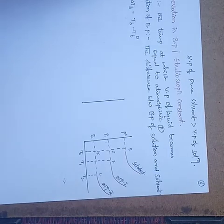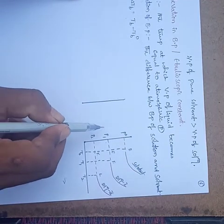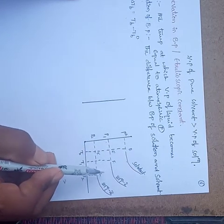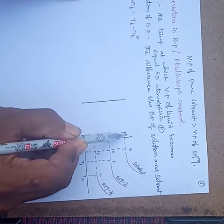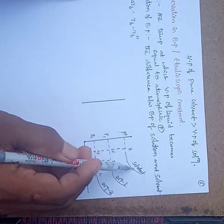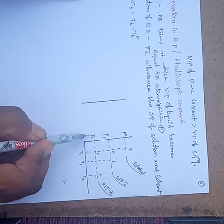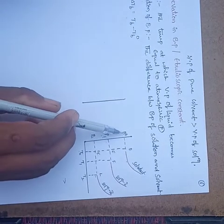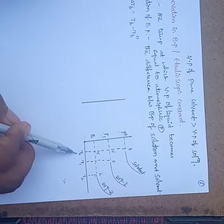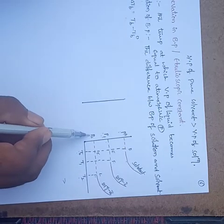The elevation in boiling point can be determined from a graphical representation. On the x-axis, take temperature; on the y-axis, take pressure. This graph is for the solvent, solution 1, and solution 2. P0 indicates vapor pressure of the pure solvent, P1 for solution 1, and P2 for solution 2. T0, T1, and T2 are the corresponding temperatures.